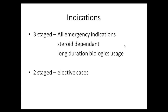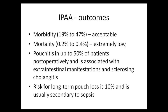Regarding outcomes, morbidity includes complications of the diversion ileostomy, adhesions even after ileostomy closure, pelvic anastomotic leaks, and other events. Pouchitis is expected in about 40 to 50 percent of patients post-operatively, whether two-stage or three-stage. It is more common in patients with acute severe colitis managed with steroids and in patients with PSC. Pouchitis is very rarely seen in patients who underwent pouch surgery for indications other than ulcerative colitis, such as FAP.